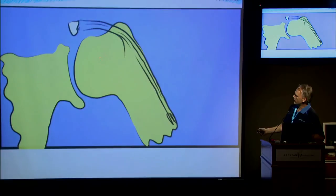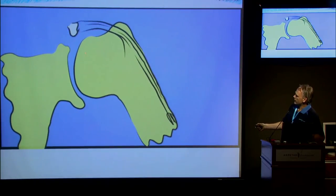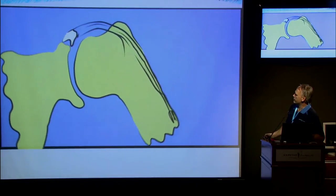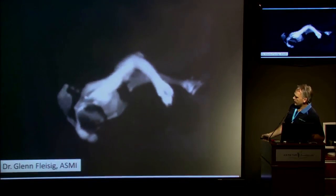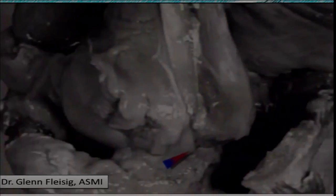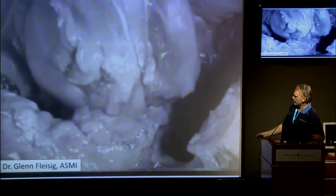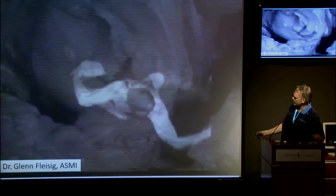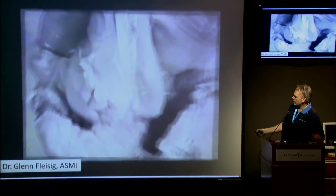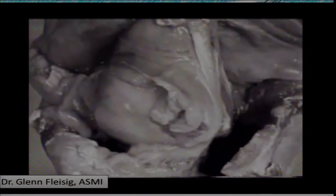The glenoid labrum: we used to think the labrum was pulled off by shoulder instability, and that may be true in some patients, but in throwers it's a completely different mechanism. During abduction and external rotation, the tension on the long head of biceps — because it's relatively trapped in the bicipital groove — leads to increased tension at the superior labrum, which is the insertion of the long head of the biceps. During external rotation and internal rotation, that is how we pull off the superior labrum.